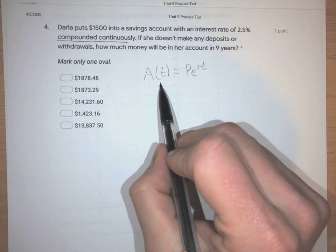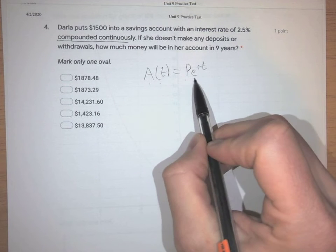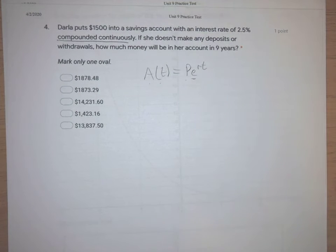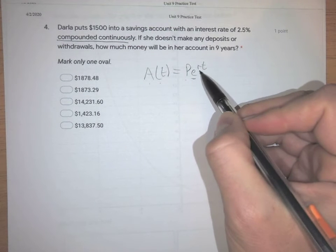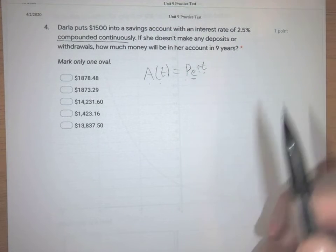A of t, the amount after some time, is equal to the principal times e, which is that like 2.71 number, to the power of the rate as a decimal times the time.